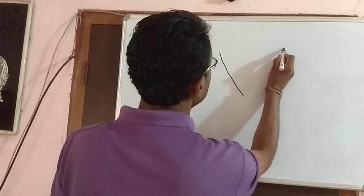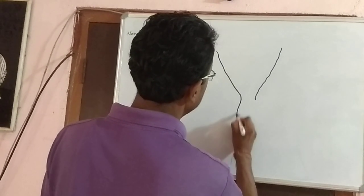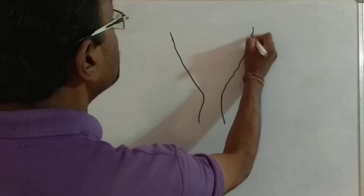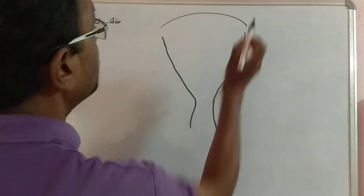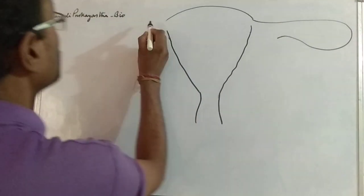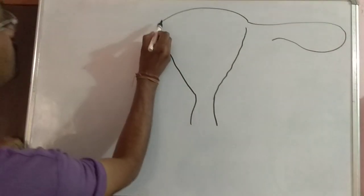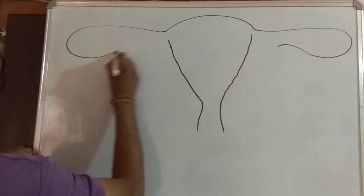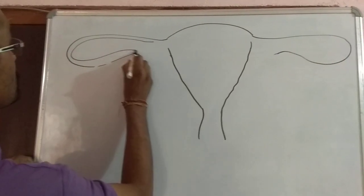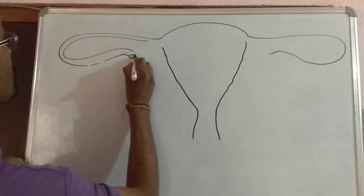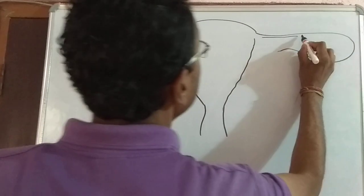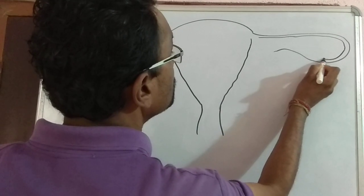Start with a B-shape structure and converge it. Then divert it here. Keep a little bit of gap, and at the upper portion make it like this. Then this one will be going up here. This part that I am drawing now is the fallopian tube.